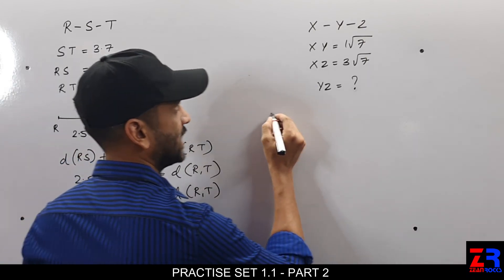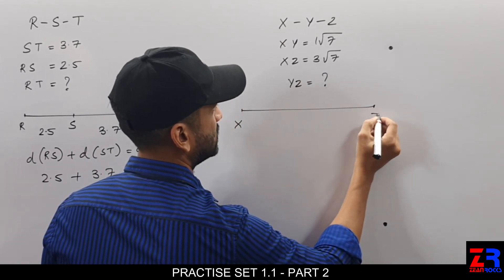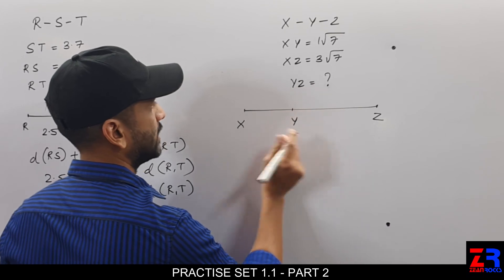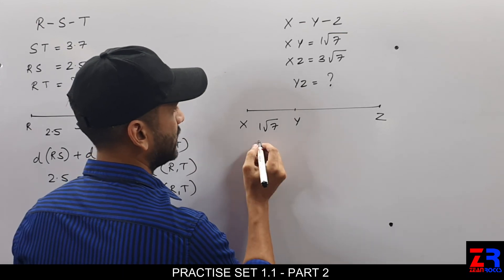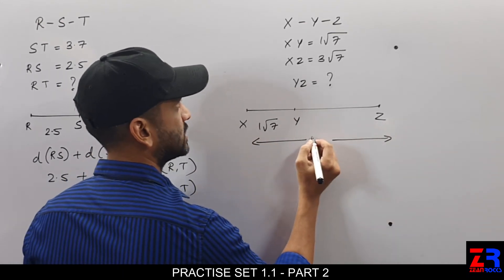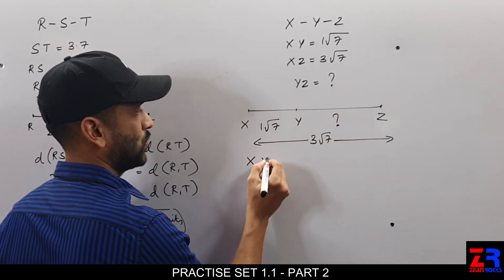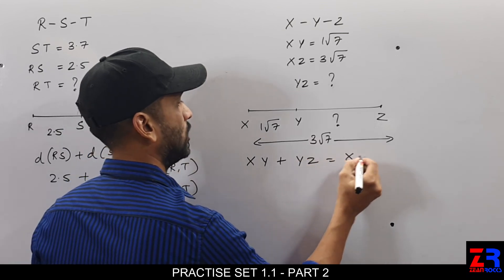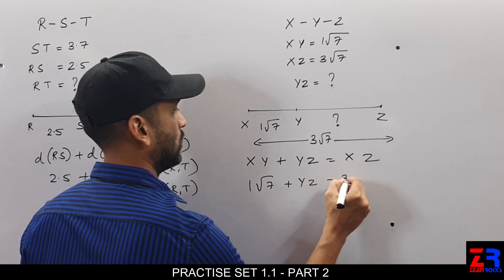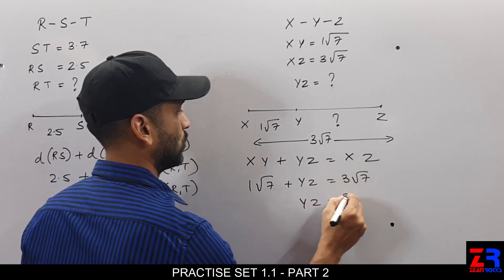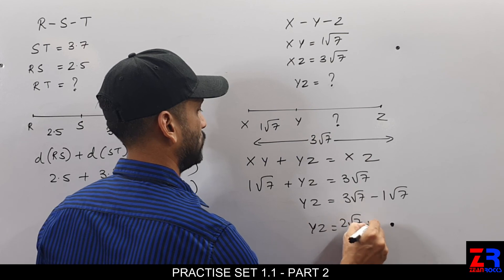Next sub-question: X–Y–Z. XY is √7 and XZ is 3√7. We are supposed to find YZ. Distance XY plus distance YZ equals distance XZ. So √7 plus YZ equals 3√7, therefore YZ equals 3√7 minus √7, which gives YZ equal to 2√7 units.